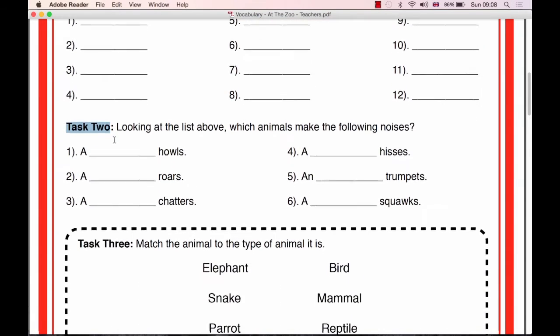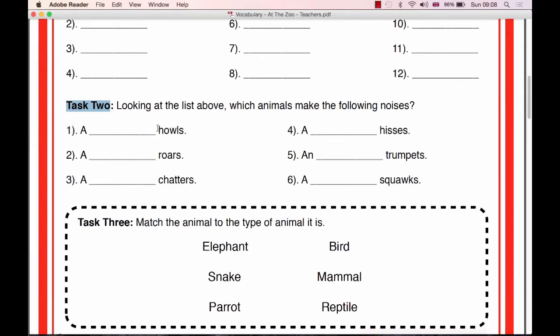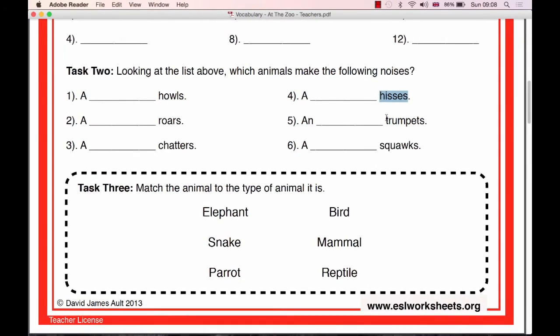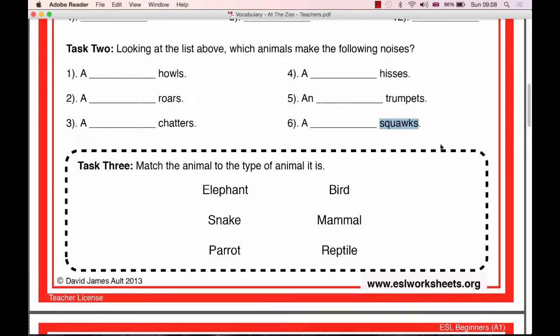Next class, task 2, we're going to be looking at the list above and think about which animals make the following noises. Howls, hisses, roars, trumpets, squawks, chatters.